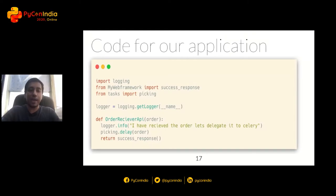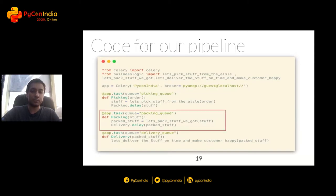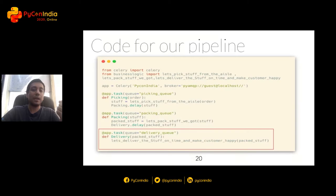The code for our application looks like this. We have an order receiver API which receives an order and offloads it to the picking worker — the entry point in our pipeline. The pipeline starts with the picking worker, which picks up products from the aisle and passes them to the packing worker. The packing worker packs and passes to the delivery worker, which delivers in time and makes the customer happy.